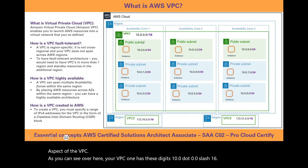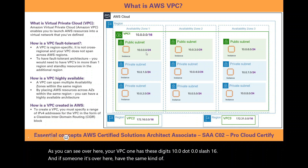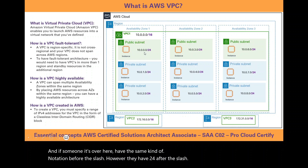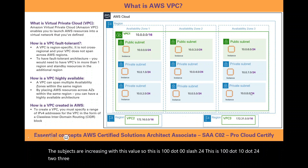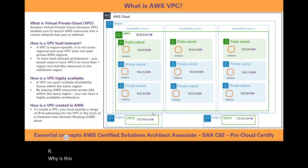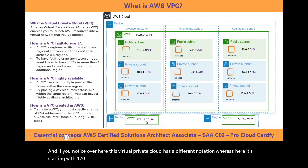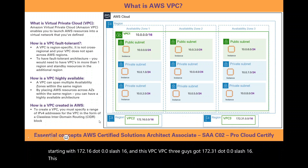The subnets increment their third octet: 10.0.0.0/24, 10.0.1.0/24, 10.0.2.0/24, and so on. Another VPC starts with 172.16.0.0/16, and VPC3 has 172.31.0.0/16. This is classless inter-domain routing — we are creating blocks. To understand CIDR blocks further, we go back to some basic networking knowledge.